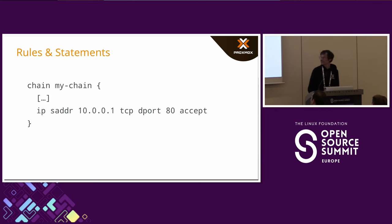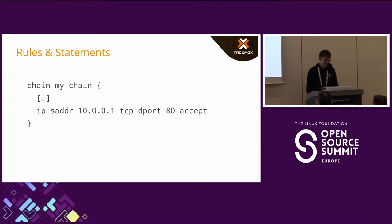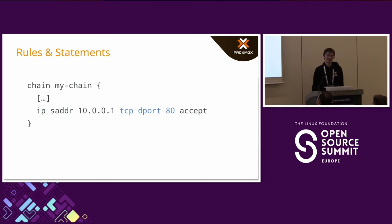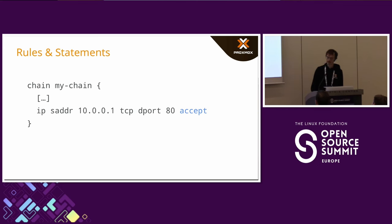A chain can contain rules. In this case it's a relatively simple rule: if the source address of the packet is 10.0.0.1 and it goes to TCP port 80, then we accept the packet. If the default policy was drop and this was the only rule, and the packet came from some other IP or to some other port, then the packet would get dropped.